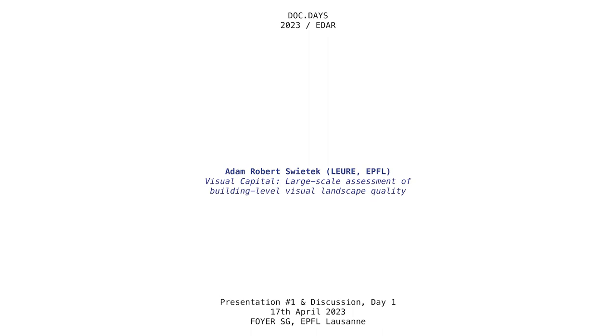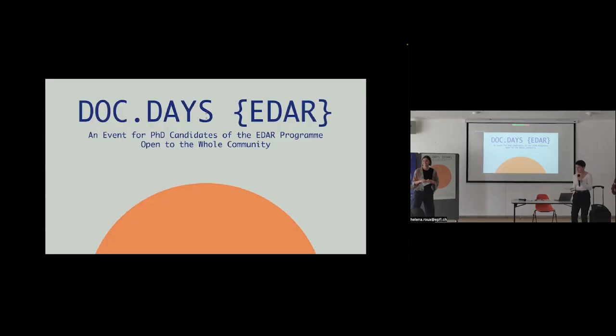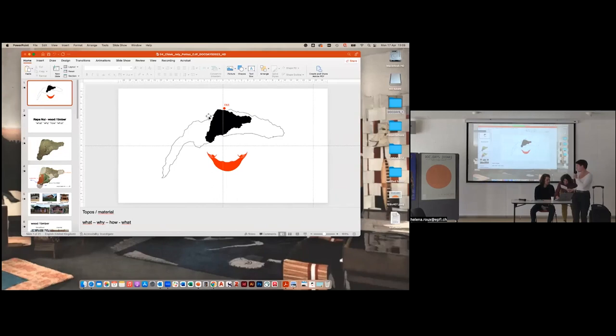The first presenter will be Adam Roberts-Wittbeck today, who is in his last year of PhD from the Laboratory of Environmental and Urban Economics, with a presentation titled Visual Capital Assessment of Building Level Visual Landscape Quality.